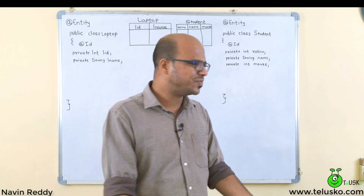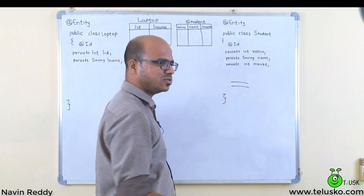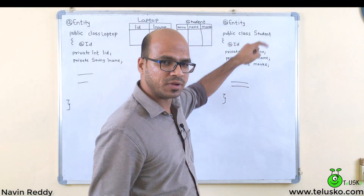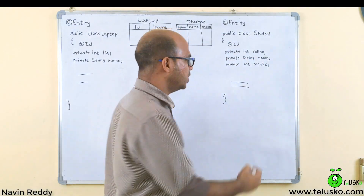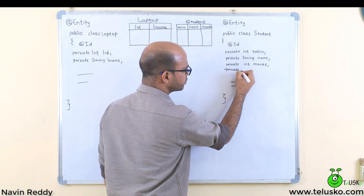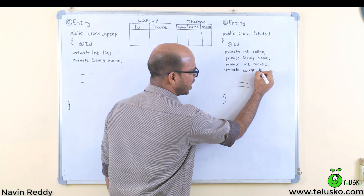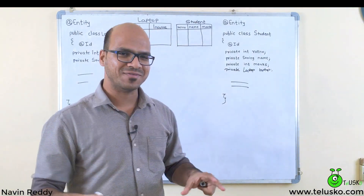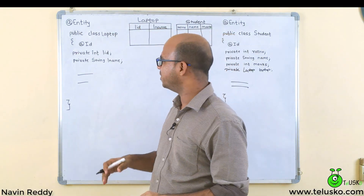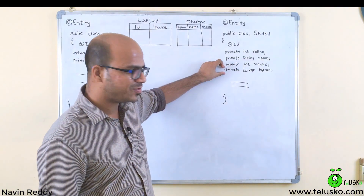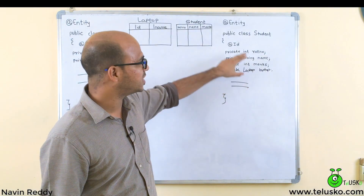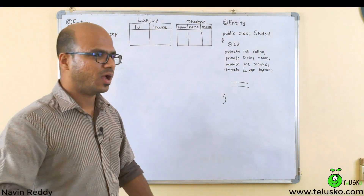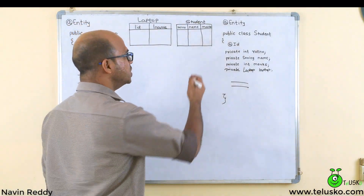Now let's say we want to create a relationship — a student will have a Laptop object. In the Student class, we add a field: private Laptop laptop. Every student will have a laptop. Now the student table will get a new column — the foreign key LID — linking to the Laptop table. This is the one-to-one relationship.